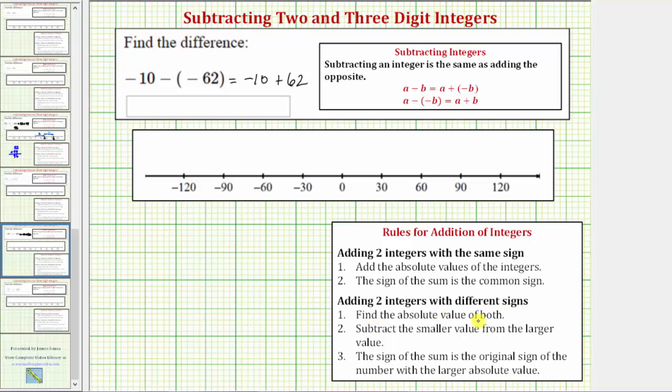Step one: find the absolute value of both integers. The absolute value of -10 equals positive 10, and the absolute value of 62 equals positive 62. Remember, absolute value is always positive.